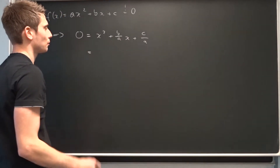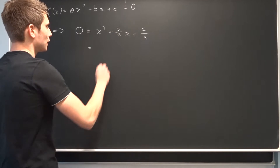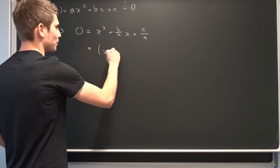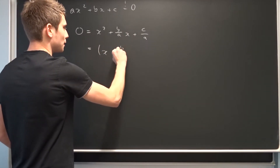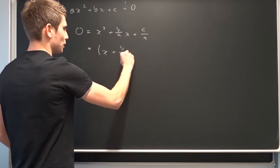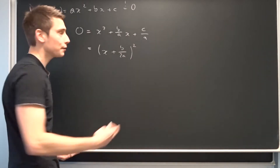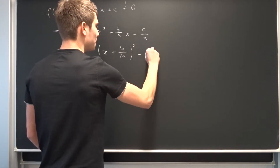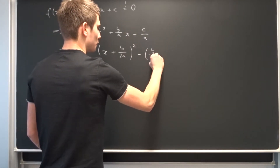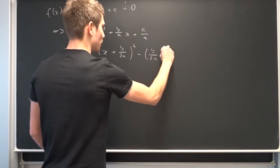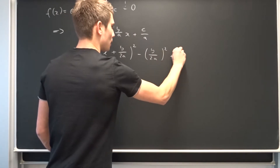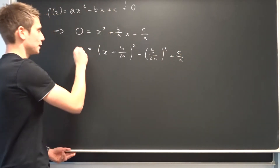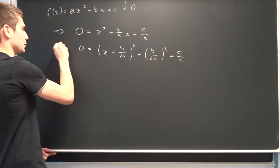So completing the square — what does it mean? That gives us x plus b over 2a, all squared, minus b over 2a squared, plus c over a. And that's still equal to zero.